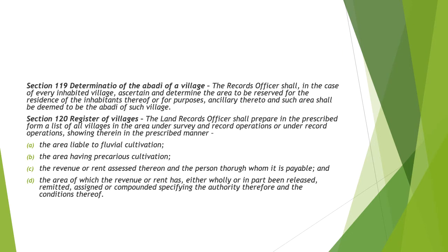Section 119 talks about the determination of the abadi of a village. The record officer shall, in the case of every inhabited village, ascertain and determine the area to be reserved for the residence of the inhabitants thereof or for purposes ancillary thereto, and such area shall be deemed to be the abadi of such village.